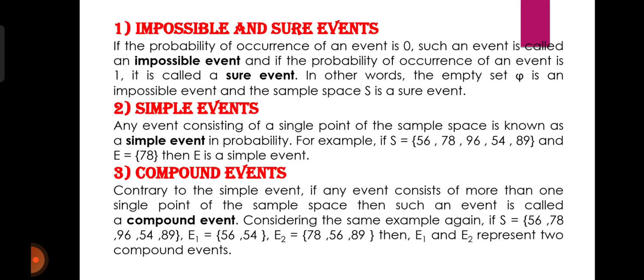Simple events: any event consisting of a single point of the sample space is known as a simple event in probability। यानि कि कोई भी event के पास अगर एक single point of sample space available होता है, तो उस event को हम simple event कहते हैं। Example के तौर पर, S = {56, 78, 96, 54, 89} और E = {78} — तो E के पास sample space का single point available है, इसीलिए E को हम simple event का नाम देंगे।